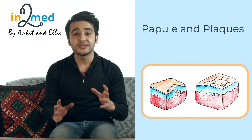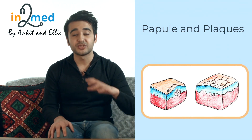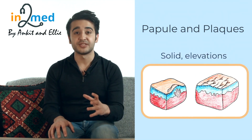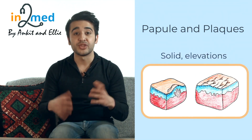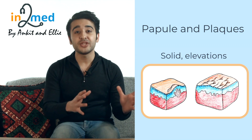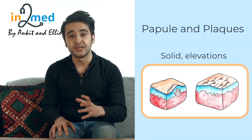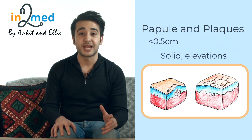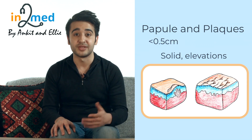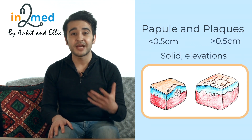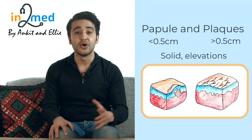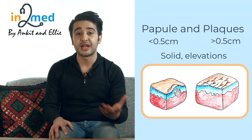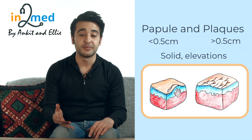The next terms you need to know are papules and plaques. These are well-circumscribed solid elevations of skin with no fluid underneath. Again, we use the word papule if it's less than 0.5 centimetres, and the word plaque if it's more than this. These are palpable and can either be skin-coloured or, for example, erythematous or purpuric.